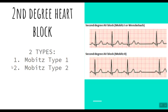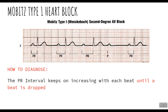Moving on, we have second degree heart block, which has two types: Mobitz type 1 and Mobitz type 2. In Mobitz type 1, the PR interval keeps increasing with progressive beats. You can see the PR interval is short here, then increases a little with the next beat, then increases to maximum, and finally a QRS complex is dropped. Then the cycle repeats: short interval, then longer, then longer, then a beat is dropped. This is diagnostic for Mobitz type 1 heart block.